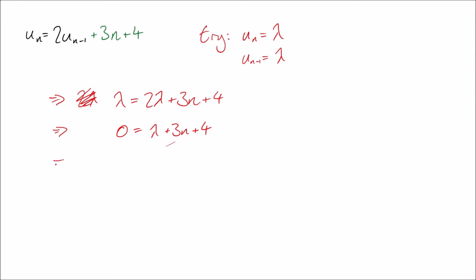Remember that this needs to work for every single value of n. It really needs to be an identity. Does this work for every single value of n? No. Well, if lambda is a constant, if we rearrange this we get n equals minus lambda minus four over three. It definitely doesn't work for every single value of n.